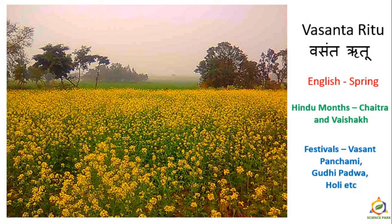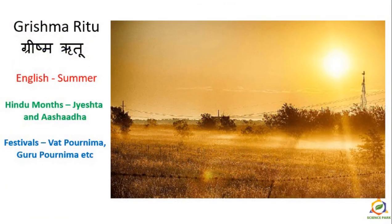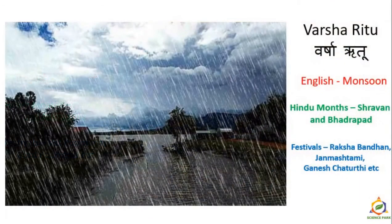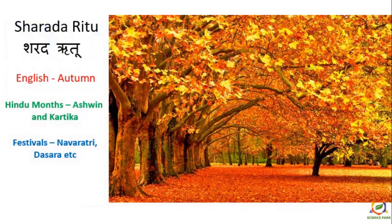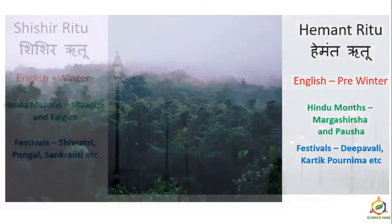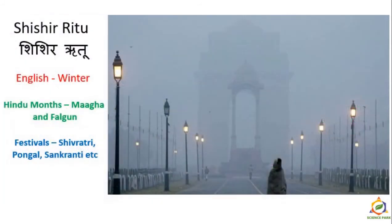Now we will look at different seasons. These occur due to the revolution of earth. In a specific period of the year, the northern hemisphere receives more light than the southern hemisphere, causing changes in climate that we call seasons. According to the Indian calendar, the six seasons are: Vasanth Rutu (spring), Grishma Rutu (summer), Varsha Rutu (monsoon/rainy season), Sharad Rutu (autumn), Hemant Rutu (pre-winter), and Shishir Rutu (winter).